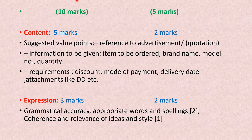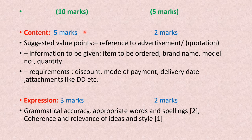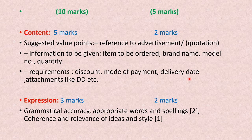After that, the content: if the letter is 10 marks, content carries 5 marks; if 5 marks, content carries 2 marks. The content should include: a reference to the advertisement, acquaintance, or quotation number; information about the item to be ordered — brand name, model name, quantity, etc.; and other requirements such as discount, mode of payment, delivery date, and attachments like DD or cheque. All these things should be there to get full marks for content.